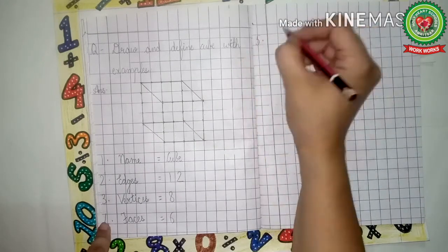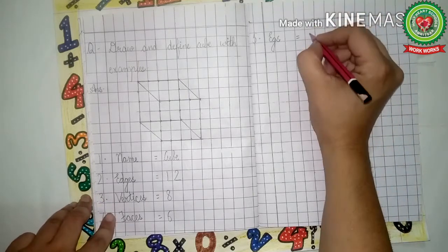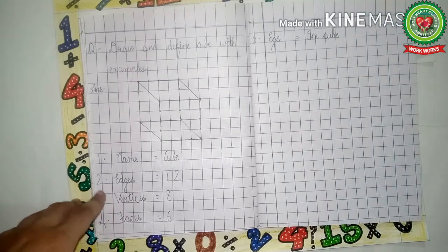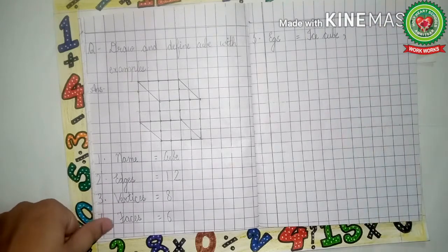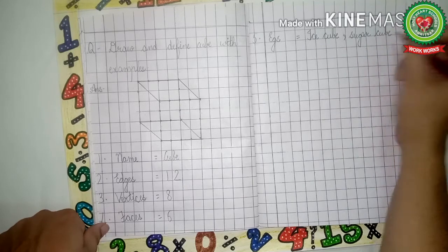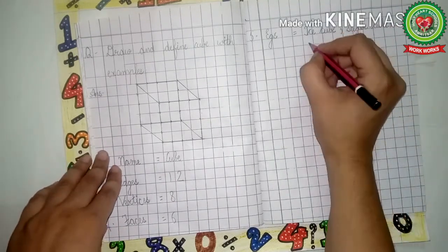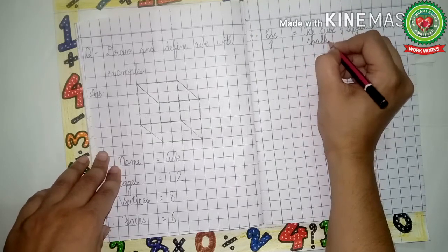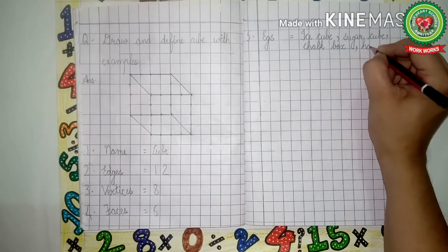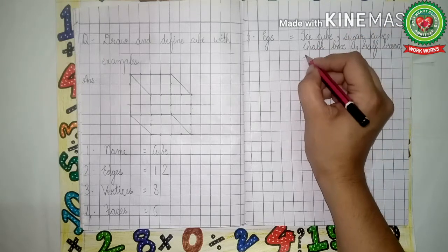Five dot: e.g., examples. Now what are the examples of cube? That is ice cube — I-C-E cube, C-U-B-E. Ice cube comma sugar cube — S-U-G-A-R sugar, C-U-B-E cube. Sugar cube comma chalk box — C-H-A-L-K chalk, B-O-X box. Comma half bread — H-A-L-F half, B-R-E-A-D bread, etc.